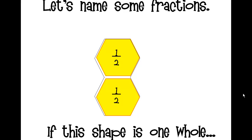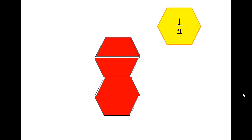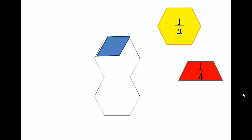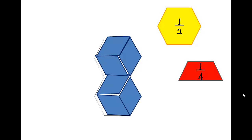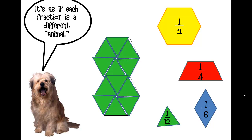So a yellow is one-half. It can be covered with four red trapezoids, so each trapezoid is one-fourth. It takes six blue diamonds to cover the shape, so each blue one is one-sixth. And finally, we can cover that shape with twelve green triangles, so each green triangle is one-twelfth. We can think of each of these pattern blocks as a different animal, in a sense.